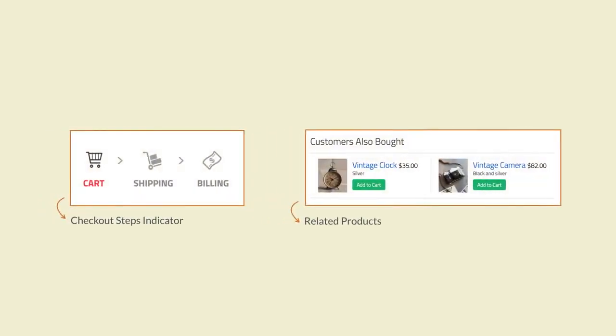Once atoms bind together, they grow in complexity and turn into molecules, which provide more functionality. In our example, the checkout steps indicator and the related product modules are molecules.